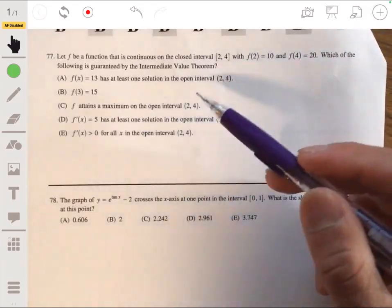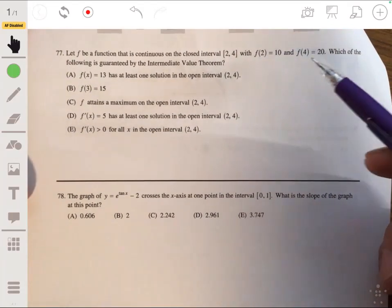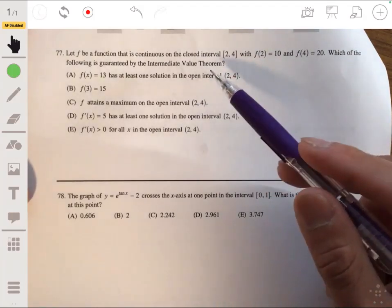All right, 77. Let f be a function that is continuous on the closed interval [2, 4] with f(2) = 10 and f(4) = 20. Which of the following is guaranteed by the intermediate value theorem?